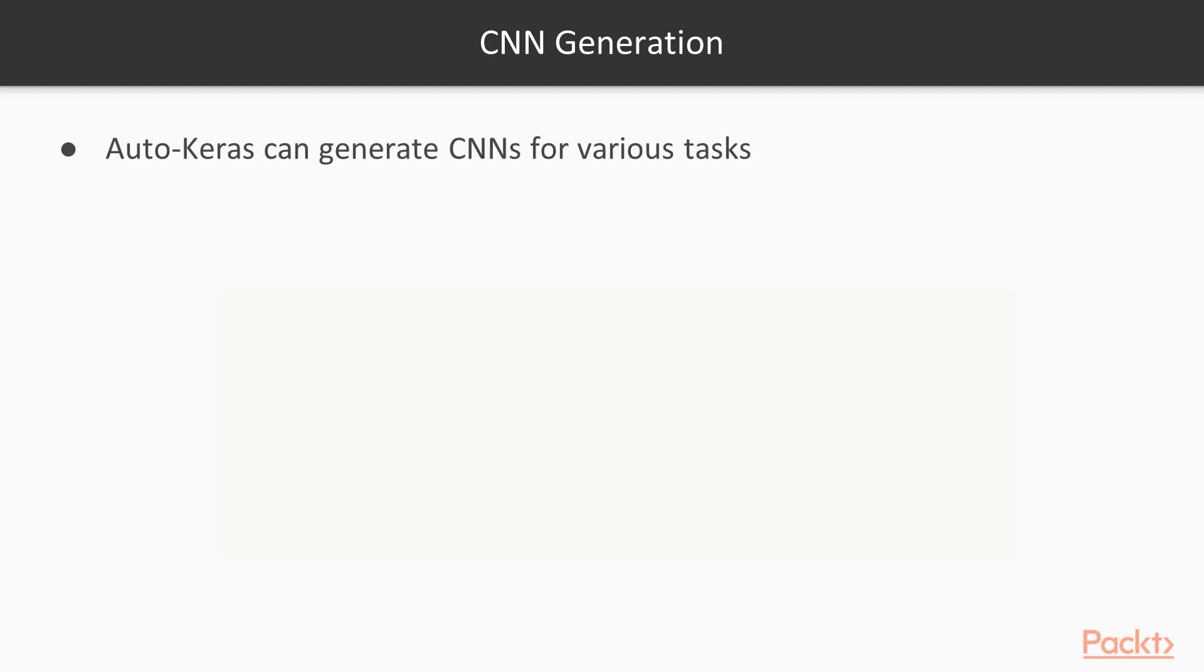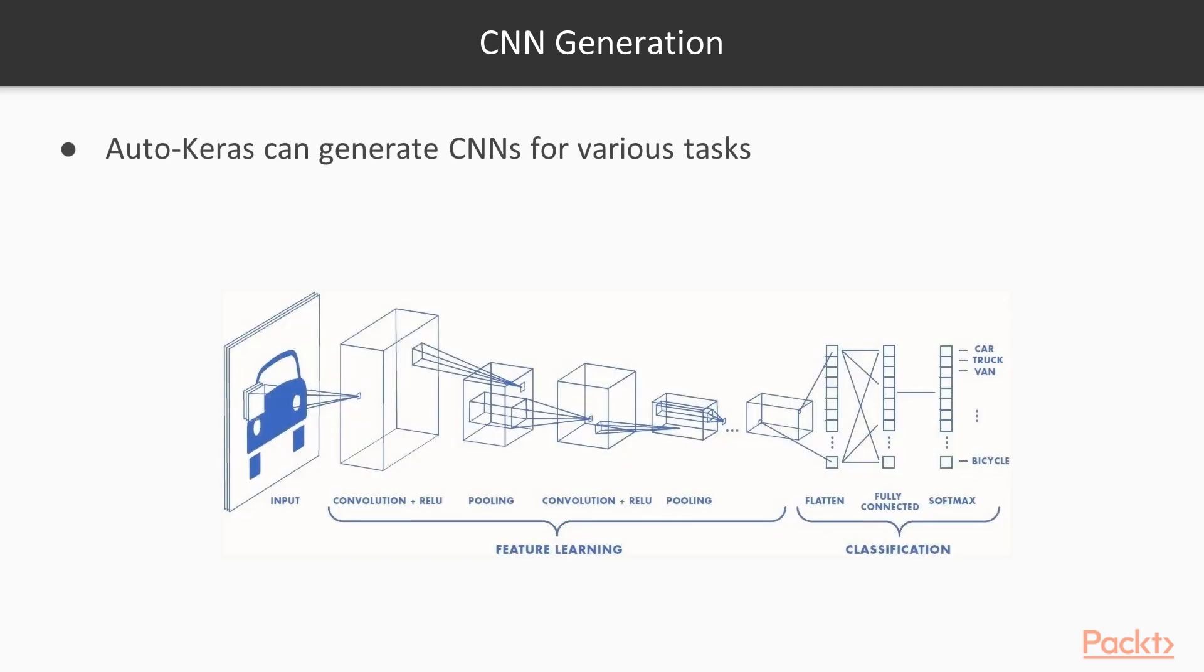Auto-Keras can generate CNNs for various tasks. Recall that a CNN is a special type of neural network that takes as input an array of pixels and it applies a lot of convolution, pooling, and nonlinearities in sequence on this array of pixels.